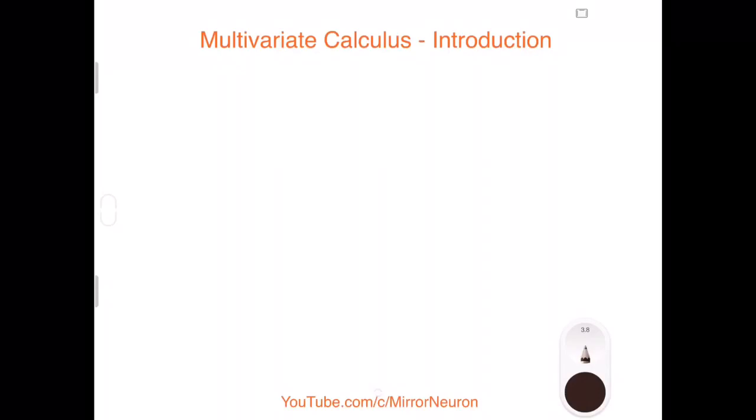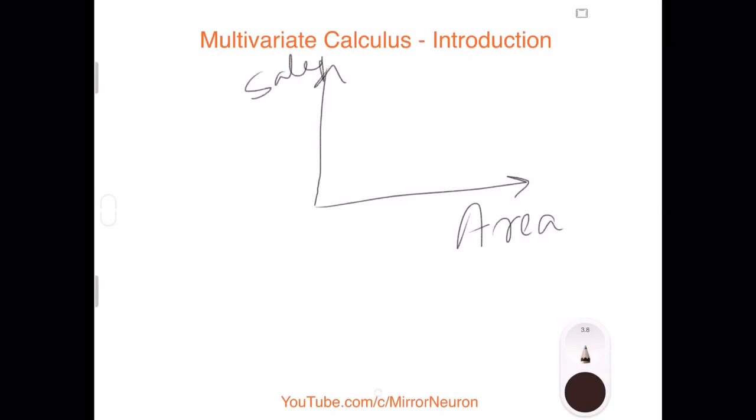So let's quickly see what we did in univariate calculus. For example, this was my graph and so this was my single variable area in square feet and this was my sale price. And my function looked something like this.